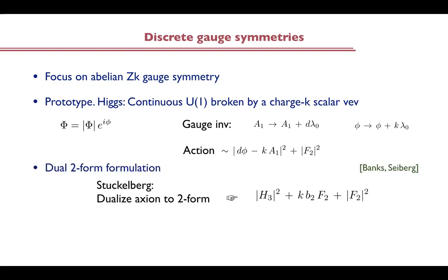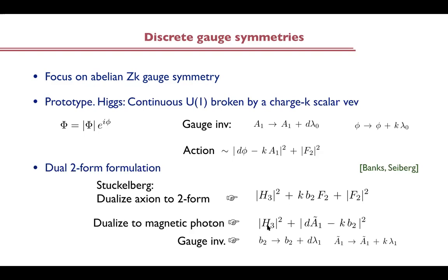There are several dual descriptions of this worked out in a nice paper in 2010 by Banks and Seiberg, also by other people. One possible description involves a two-form, giving a kind of Stückelberg action where you have a kinetic term for the two-form gauge field. In natural normalization, the factor K here is an integer having to do with the order of the discrete symmetry. You can also dualize the photon to the magnetic photon, giving a Lagrangian with a two-form kinetic term. The two-form is eating up the magnetic photon dual to the electric photon at the beginning. This dual action has a gauge invariance — the standard gauge transformation for the two-form and an inhomogeneous shift for the magnetic photon.